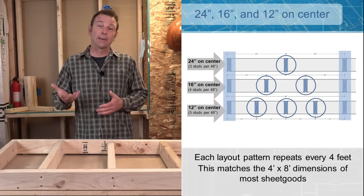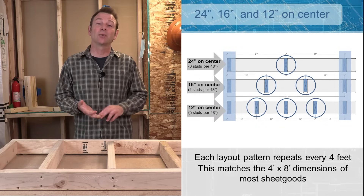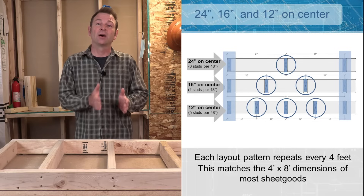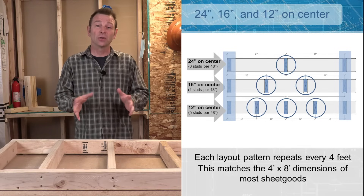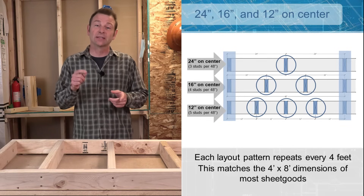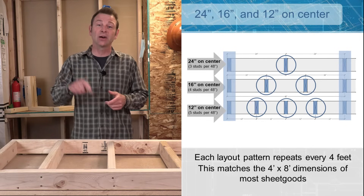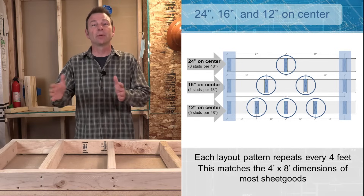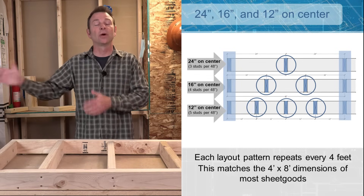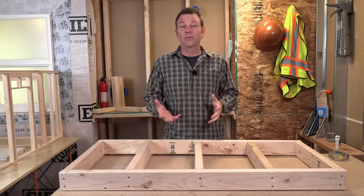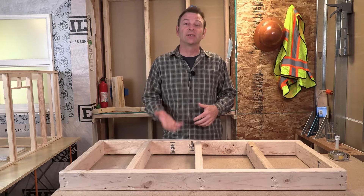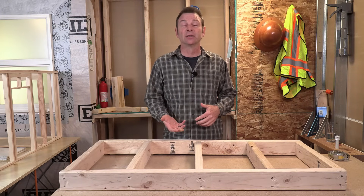This illustration compares the three main layouts — 24, 16, and 12 on center — with all studs in regular patterns. What you should notice is that there is a stud shared by all of these layouts every four feet, and this pattern repeats all the way down the wall. That repeating four-foot pattern is really important when we're adding materials to this framing later.